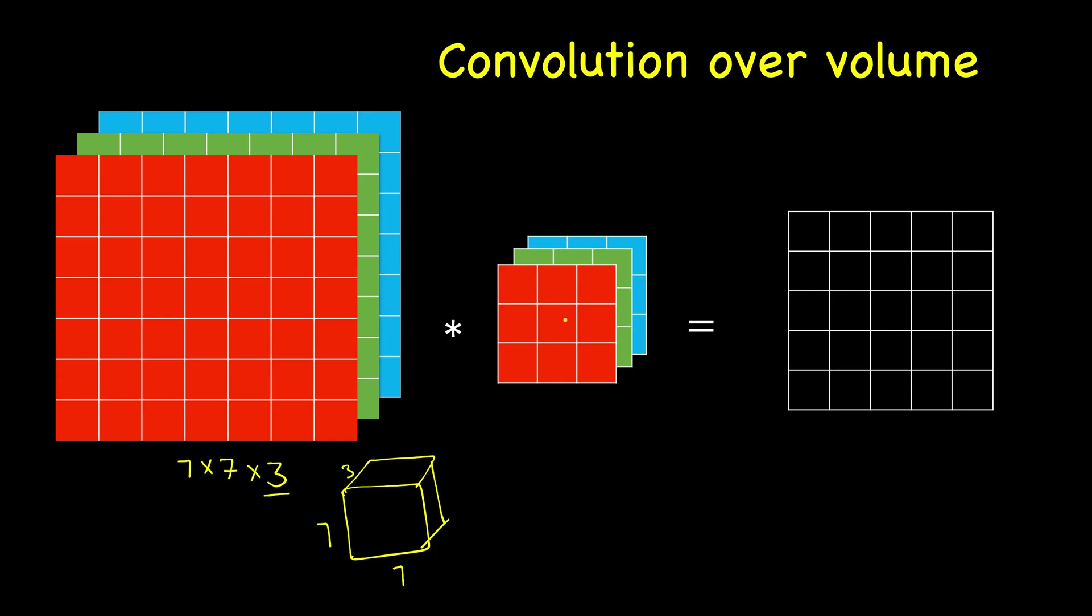And the filter should also have the same number of channels. So if this is 3×3×3, not these three but this one, this denotes the three channels. So this should be same as this. You can also represent this as a small volume here.